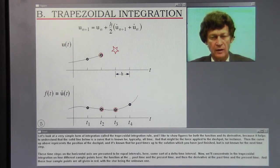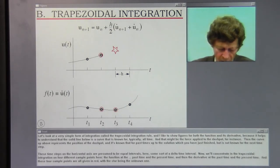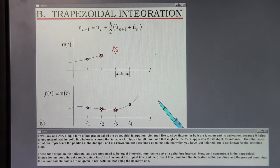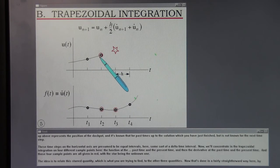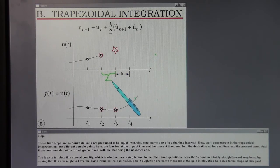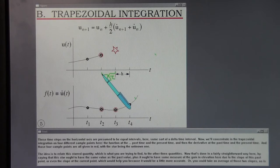Let's look at a very simple form of numerical integration called the trapezoidal integration rule. I like to show figures for both the function and its derivative because it helps you understand that the solid line below is a curve that is known for typically all time. Then the curve above represents the position of the dashpot and it's known for past times up through the solution of which you have just finished, but is not known for the next time step. These time steps on the horizontal axis are presumed to be equal intervals here, some sort of a delta time interval.